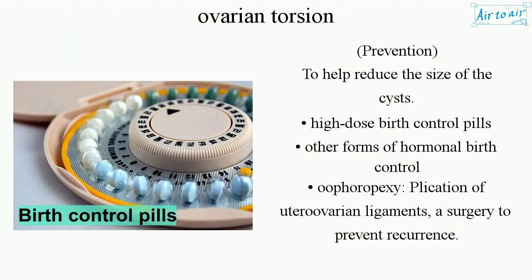Prevention: to help reduce the size of cysts, high-dose birth control pills or other forms of hormonal birth control may be used. Oophoropexy and plication of uterovarian ligaments are surgeries to prevent recurrence.